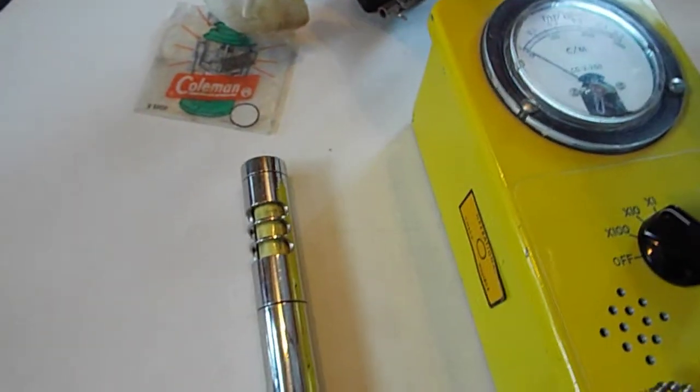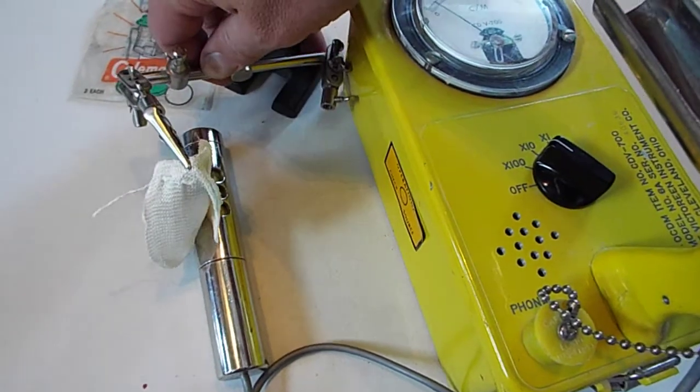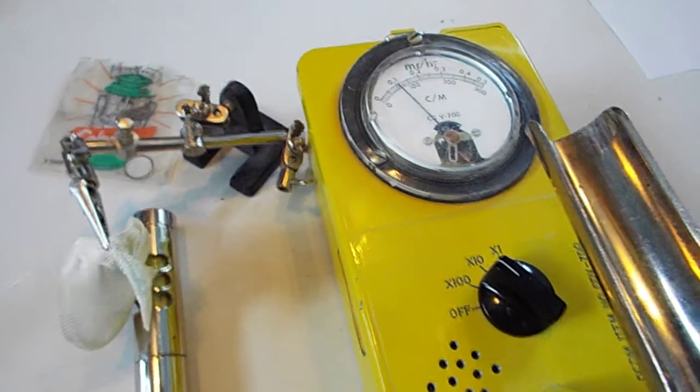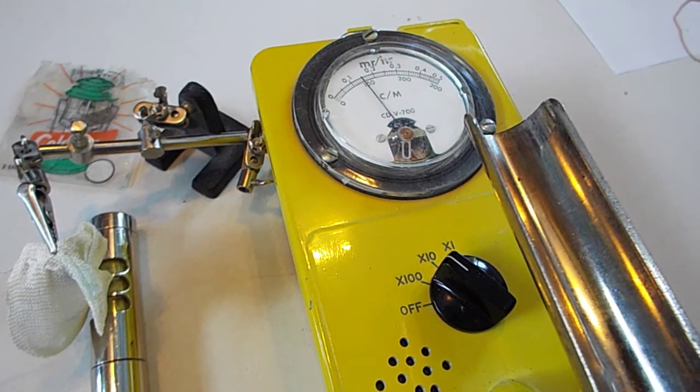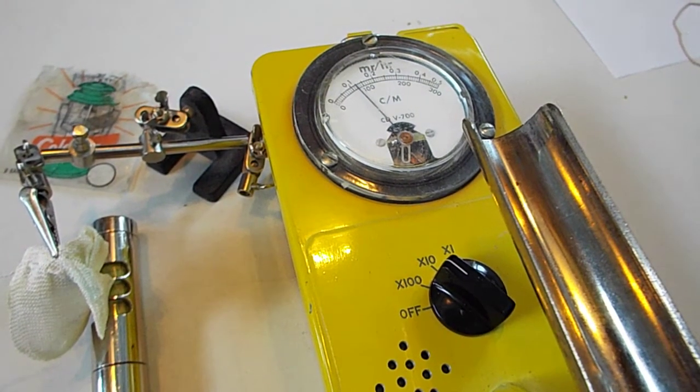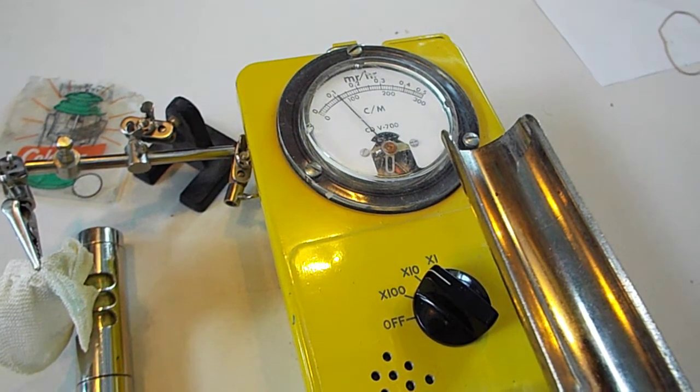If I move the lantern mantles in front of the probe, you see the reading going up. We're reading on the 10x range, so the 0.1 to 0.15 is actually 1 to 1.5 milliroentgens per hour.